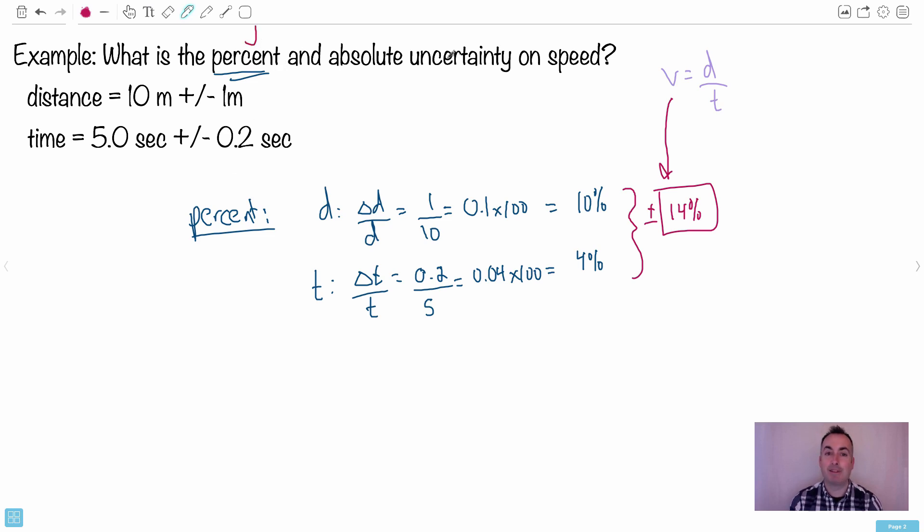Now to do the absolute uncertainty, you could work it all out with that equation, delta D over D plus delta T over T, and multiply that by V. You could absolutely do it that way. But instead, let's just use this percent uncertainty. We know the percent uncertainty, so that's actually really good. We know that the velocity, sorry the speed, is going to be just 10 divided by 5. Hope you know that it's going to be 10 divided by 5, which is just equal to 2. We don't know how many decimals to put, but we know it's 2 meters per second.